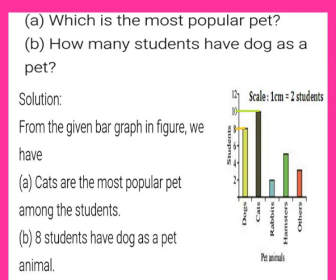Solution: look at the bar graph. The x-axis consists of different pet animals — dogs, cats, rabbits, hamsters, and others — and the y-axis consists of the number of students who like that particular pet animal. First subdivision: which is the most popular pet? From the bar graph, the bar for cats is the tallest and it indicates the number 10, which is the highest of all, so cats are the most popular pet among the students.